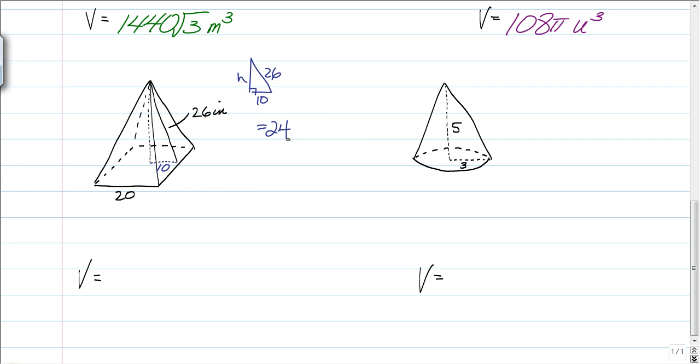So we're ready to go. The base is just a square, 20 by 20. So the area of the base is 400. Multiply that by one-third because it's a pyramid, and by the height, which we found is 24. Put it all together: 3,200 inches cubed. Done. That's it.